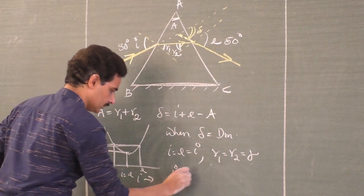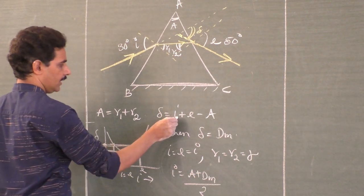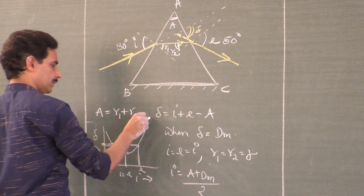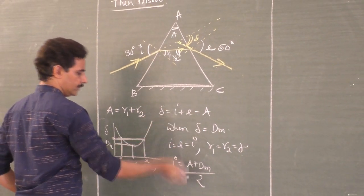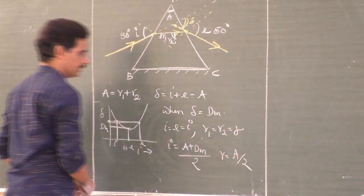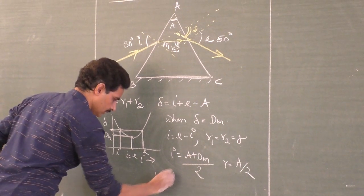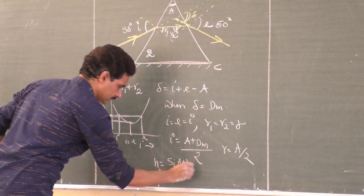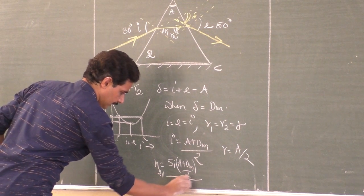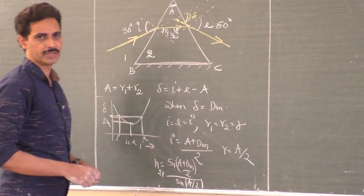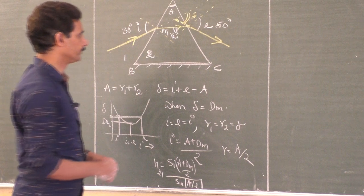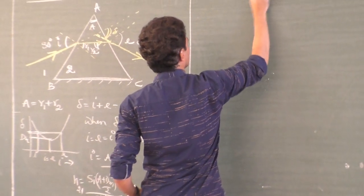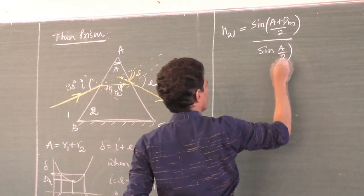When delta equals dm, minimum angle of deviation, we have i equals e, and r1 equals r2 equals r because these two become equal. So then i equals (A + dm)/2, and r becomes equal to A/2. Then the final formula: n21 equals sin((A + dm)/2) divided by sin(A/2). This is the refractive index of the material of the prism with respect to the surrounding medium: n21 = sin((A + dm)/2) / sin(A/2).